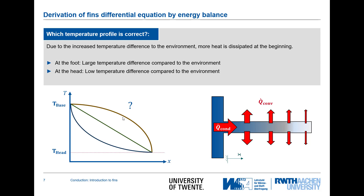From these considerations, we can look at which temperature profile might be correct for the fin. Due to the increased temperature difference to the environment at the fin bottom — where we have the highest temperature — there is in general a heat flow going from left to right. In the simplest case this would be linear, as in a plain wall, but we also have convection taking place on the outer side. The convective heat transfer is related to the temperature difference, which is high at the base and lower at the tip, leading to a lower heat flux being removed at the top.